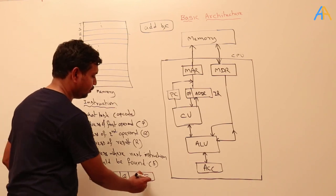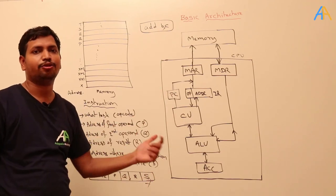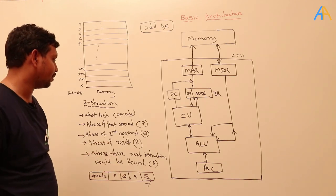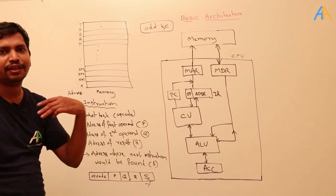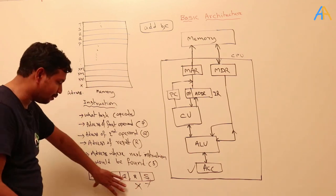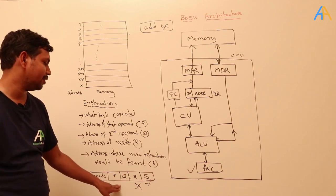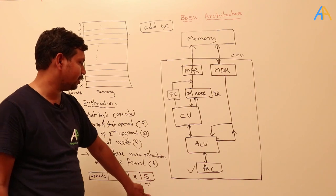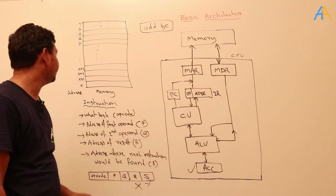So we isolate the 'next instruction address' from the instruction itself. The program counter contains from where the instruction has to be fetched. We are eliminating that field from the instruction. Similarly, the address of the result — after execution, the result will be stored in the accumulator by default, so we also discard that field. By eliminating these two fields, the instruction length is reduced to just opcode and operand addresses.